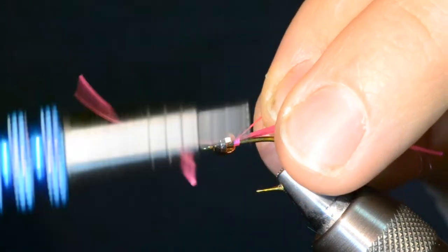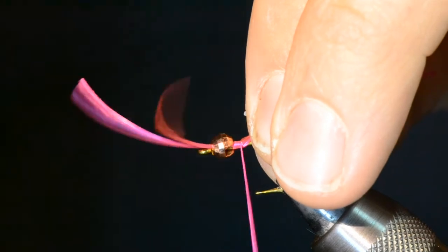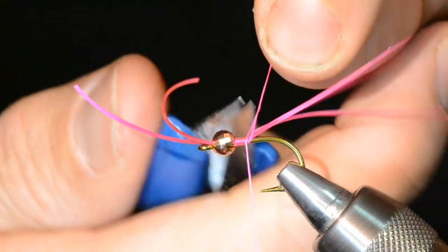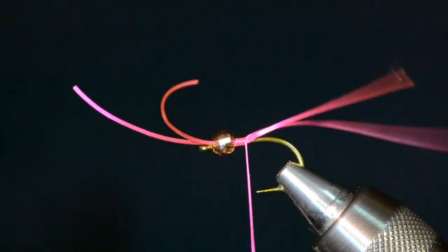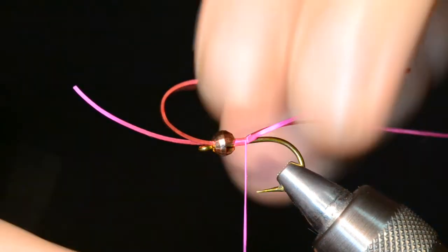So I'll make a few more wraps just over the back of it here. That looks great. I'm going to cut that tag end of my thread out of the way, and I'm going to go ahead and wrap these rubber strands down to about even with the barb of the hook.